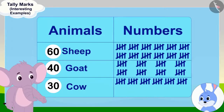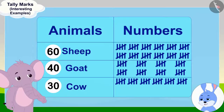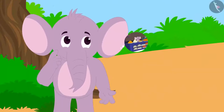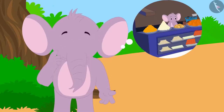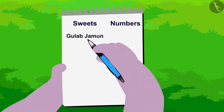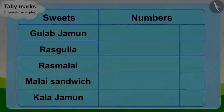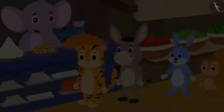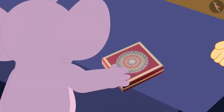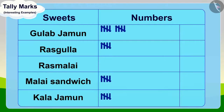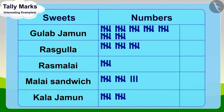Appu was very excited to have learnt about tally marks from Bunny. He thought, why doesn't he use tally marks to know more about the sale of sweets in his shop? He immediately put the names of all the sweets sold in his shop in a table. As his sweets were sold, he continued to make tally marks in front of those sweets. At the end of the day, Appu's table was filled like this.